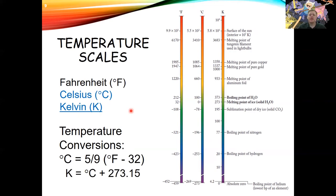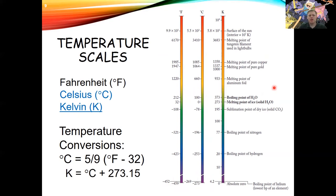Zero Kelvin is equivalent to absolute zero — at zero Kelvin there's no energy, no motion, nothing. The corresponding value in degrees Celsius is −273°C, and in Fahrenheit it's −459°F. Celsius is derived from the melting point and boiling point of water: 0°C is the melting point and 100°C is the boiling point.